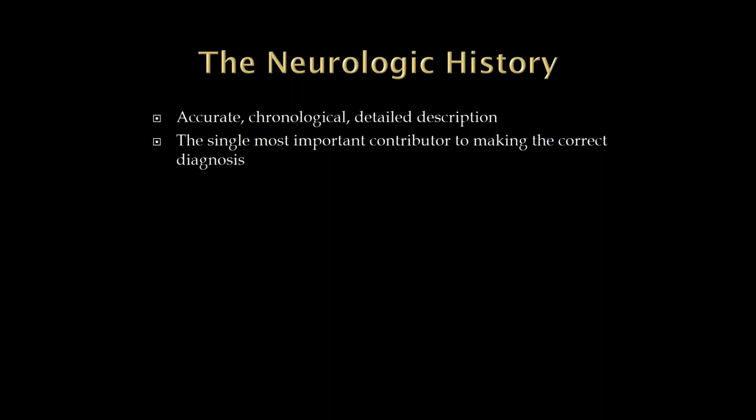One more thing about the history: we want a very accurate, chronological, detailed description. When were you last normal? How did it start? How did it progress? I saw a patient at the VA within the last few months — a lady who came in said she had seizures, was on seizure medications that weren't helping. After spending a long time getting the story, it turned out her seizures mainly occurred when the in-laws came over — a bit of a red flag. Eventually it seemed clear she was having pseudo-seizures, more of a psychological process, not truly epileptic seizures. The history allowed us to make that diagnosis. It is the single most important contributor to making the correct diagnosis.